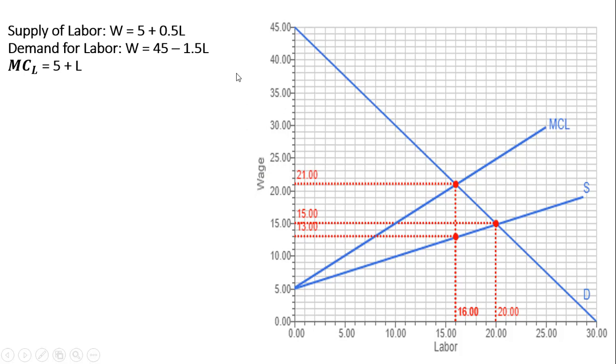And it will have a horizontal intercept of 30. If W is 0, and if we're to solve for L, 45 divided by 1.5 is 30. So that's where the horizontal intercept is coming from. And then the supply of labor.